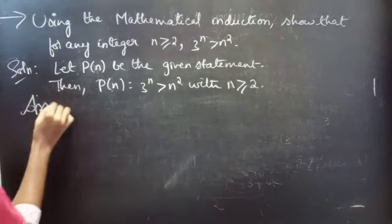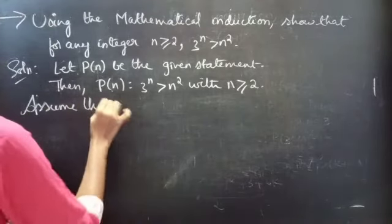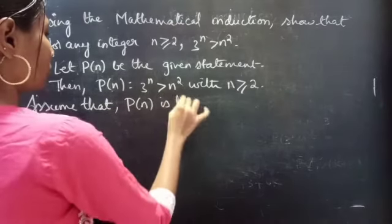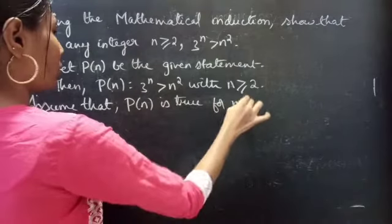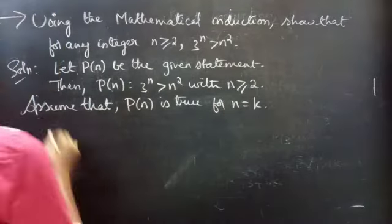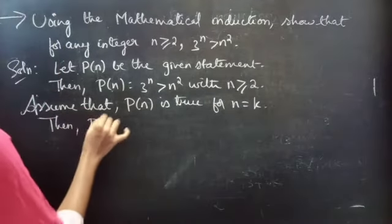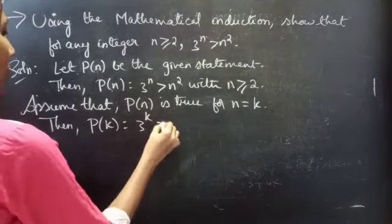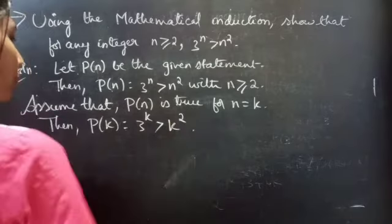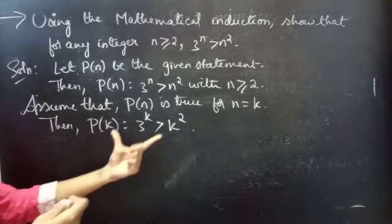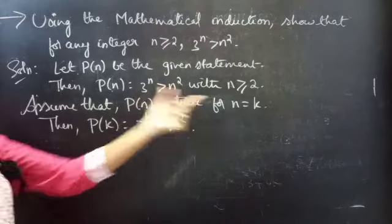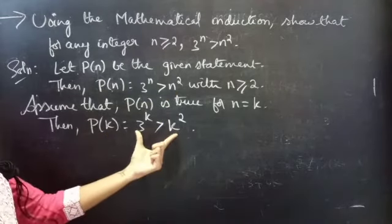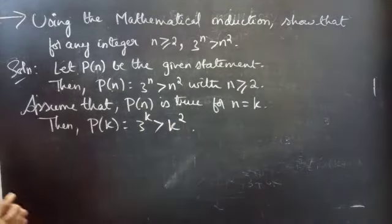So let's assume that P(n) is true for n = k. Then P(k) states that 3^k is greater than k². We have assumed the statement is true for some n = k, so this is true and we can use this statement.